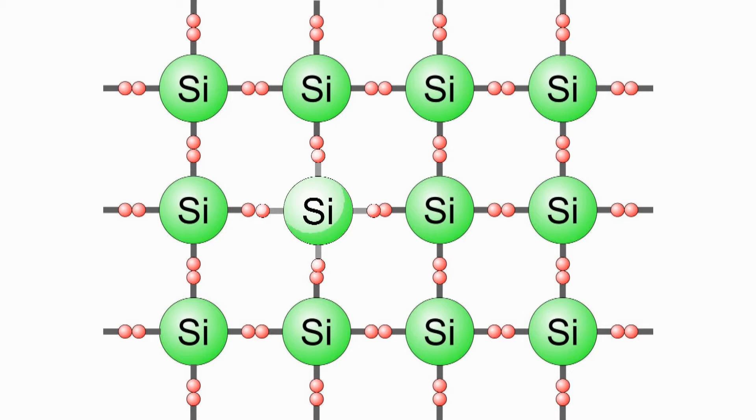You will notice that silicon has four electrons in its valence band. Each of these electrons forms a bond with a neighboring atom. This is called intrinsic silicon, and it's actually not a very good conductor of electricity.